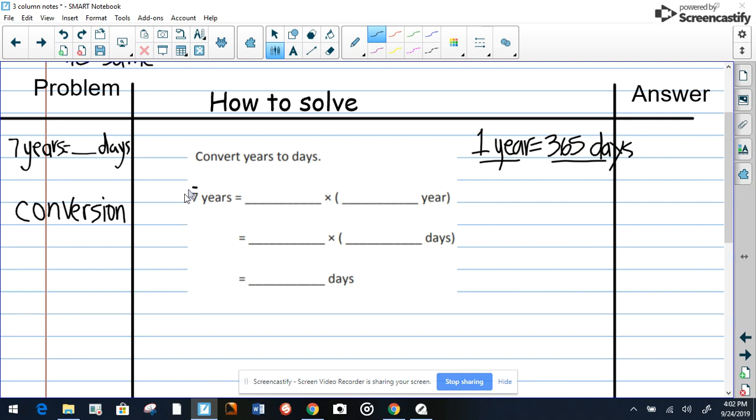Now this one says seven years, so the seven is moved here and then it says years. So now we're going to write this here. That will be one year. Why do we write it that way? Well, let me show you why. The seven is going to be brought down here times, and that year is going to be written into days.